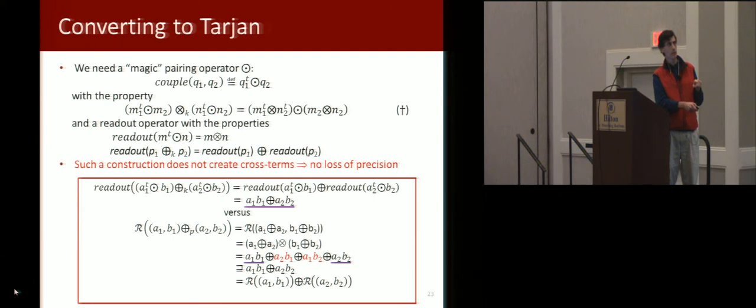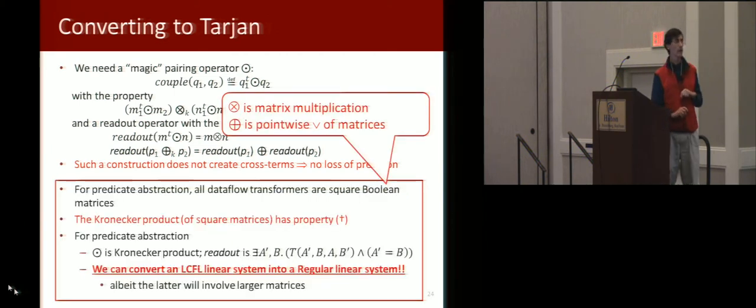If we start with the thing that led to the problematic term, we distribute the readout, and now we get just these two terms, and we avoid the cross terms. Can we do this?